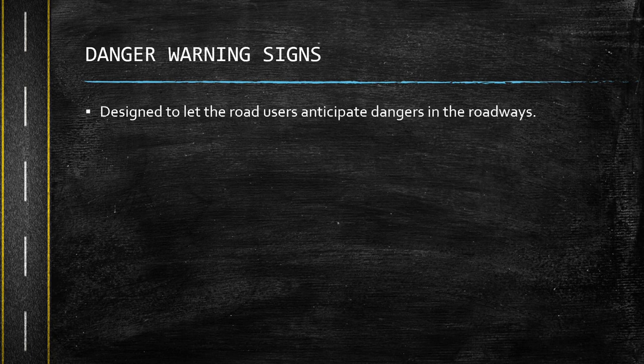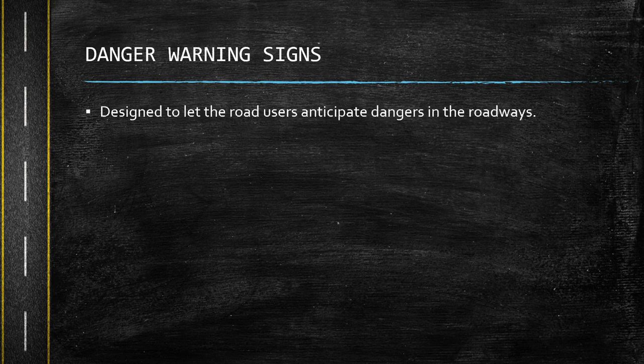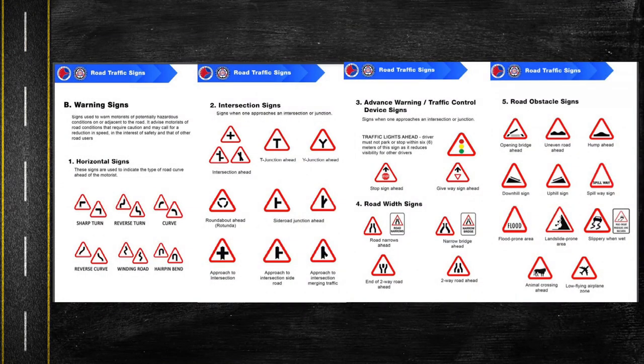First on our list would be the danger warning signs. These are designed to let road users anticipate dangers in the roadways. Danger warning signs are used to warn and inform traffic users or drivers to be more cautious and careful in traveling, because it may anticipate danger in the roadway as they travel.